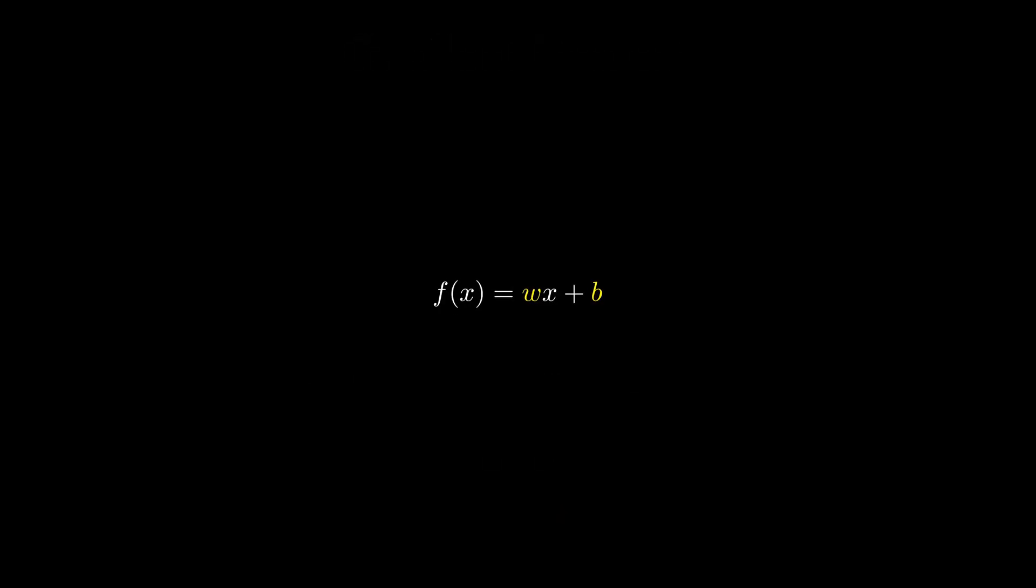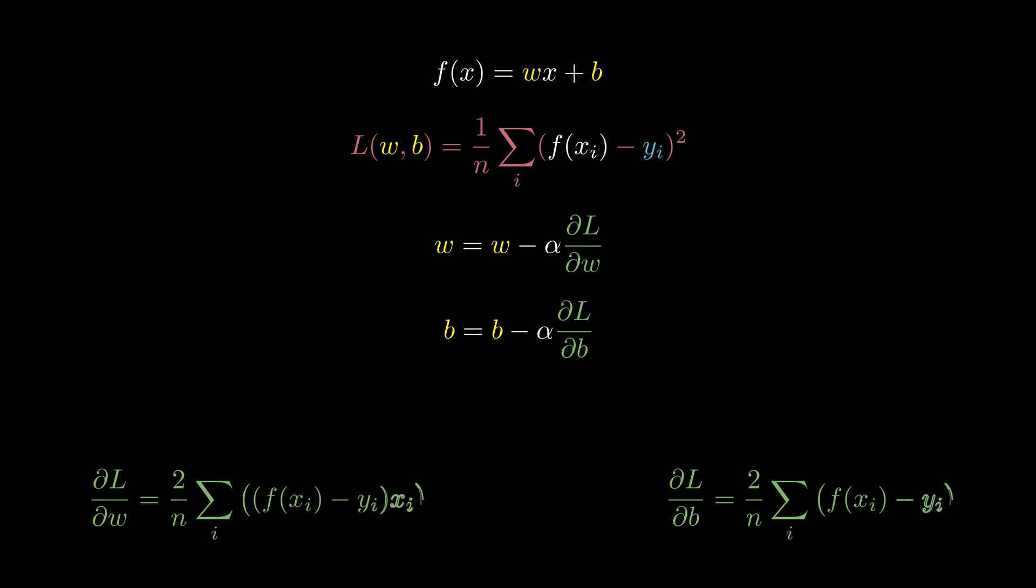Looking into minimizing the cost function step by step, it all starts with the linear model. Then we define the cost function which tells us how well our model fits the given data set. Earlier, I discussed a 1D case where we found the minimum at x equals minus 1. Here we have two variables w and b. However, the procedure is exactly the same and we update w and b independently using partial derivatives.